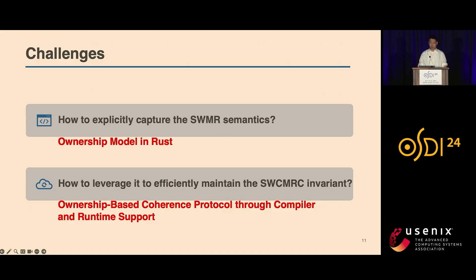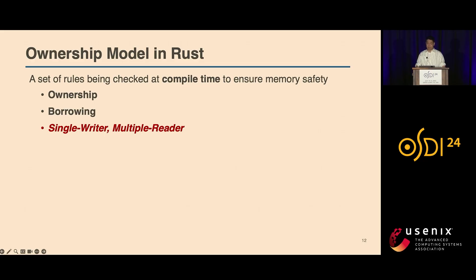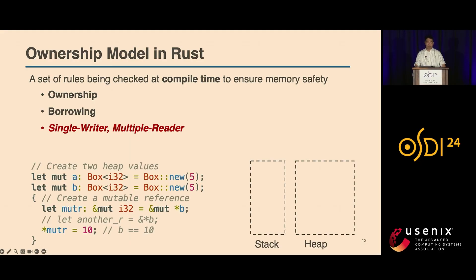Let me first briefly introduce the ownership model. The ownership model is foundational to Rust programming. It offers many benefits like memory safety and concurrency correctness. It is basically a set of rules that the compiler checks at compile time. The concepts of ownership and borrowing are central to this model, and a very important aspect of borrowing is the single-writer multiple-reader pattern. On the left is a small piece of code, and on the right is a thread stack and memory heap. In Rust, each value has a unique owner, and the value will be cleaned up when the owner goes out of scope. This rule prevents resource leaks and dangling pointers.